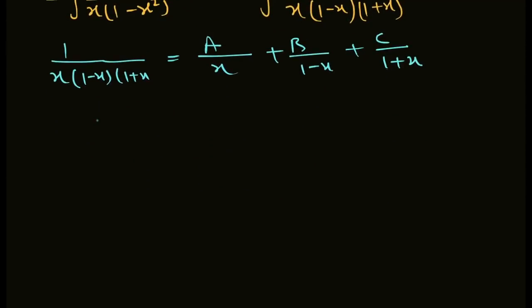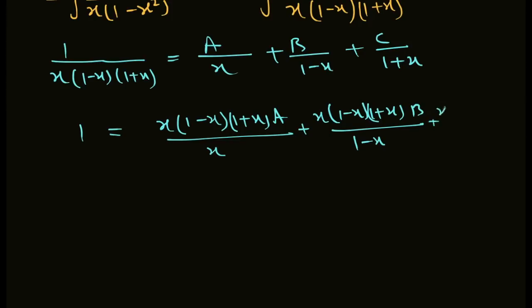We solve this further. By cross multiplication: 1 equals x(1 minus x)(1 plus x) times A upon x plus x(1 minus x)(1 plus x) times B upon (1 minus x) plus x(1 minus x)(1 plus x) times C upon (1 plus x). The x cancels with x, 1 minus x cancels with 1 minus x, and 1 plus x cancels with 1 plus x.